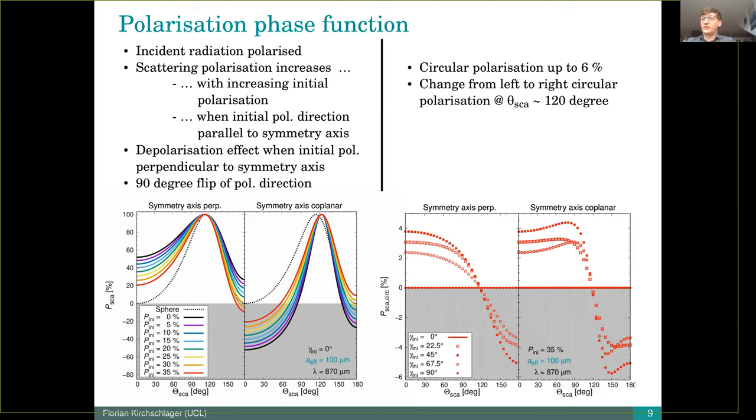And then we also focus on the circular polarization, which is zero for spherical grains because of symmetry reasons. But for the elongated grains, we see a circular polarization up to 6% and a change from left to right circular polarization at around 100 degrees.